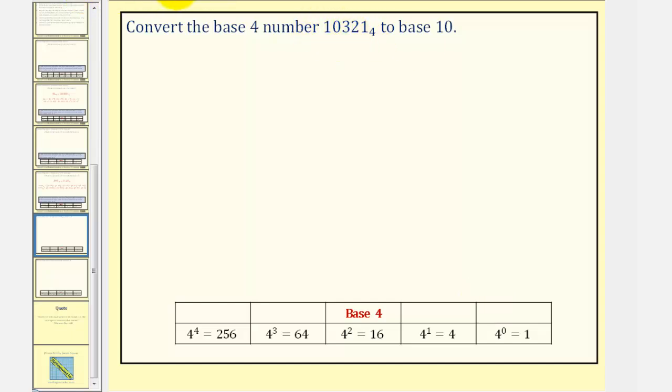So to convert this to base 10, we can say that 10,321 base 4 would be equal to, we have, this 1 indicates 1, 256. So we have 1 times 256, plus we have a zero in the 4 to the third, or 64 place value. Let's go ahead and put that in there. We'd have zero times 4 to the third, or 64.